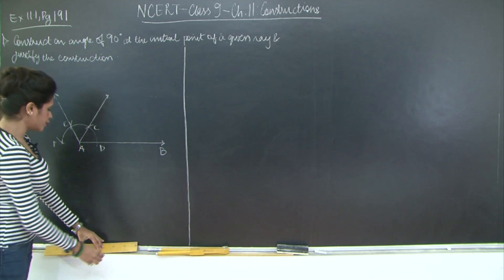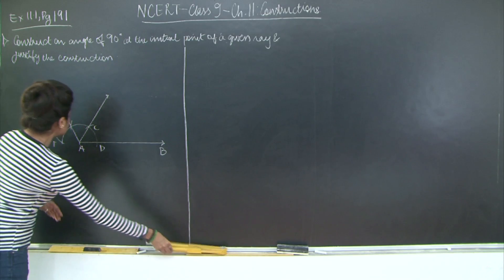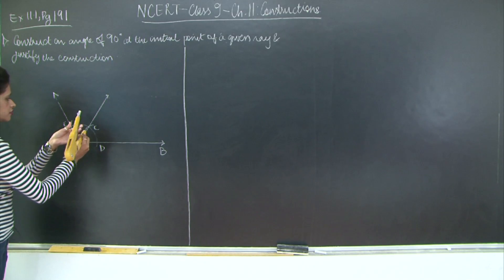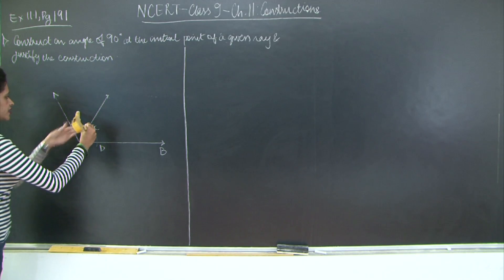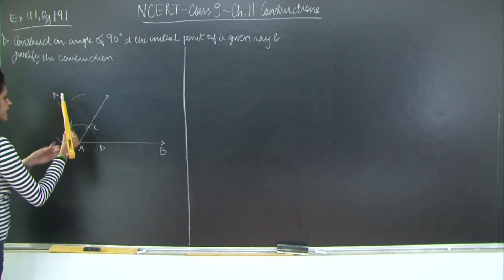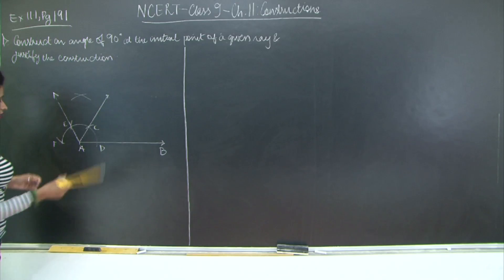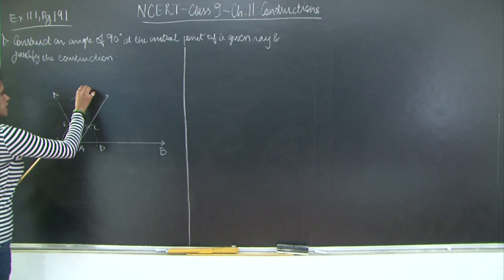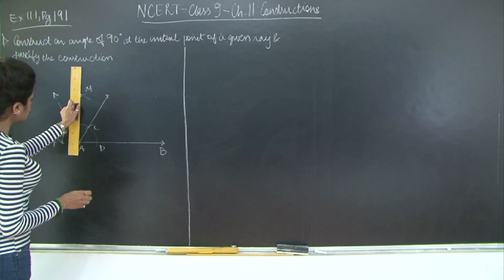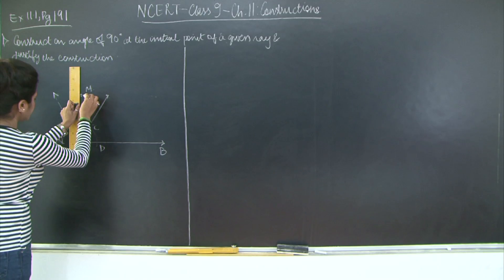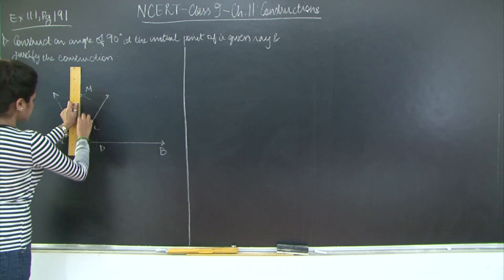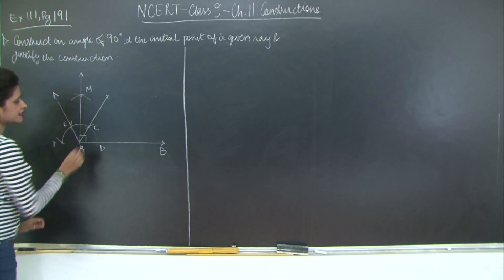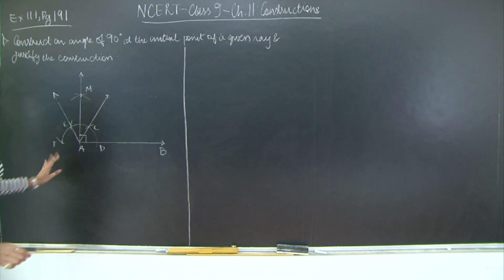Now we are going to draw the angle bisector of angle EAC. We already have an arc here, and we learnt how to draw the angle bisector. I will call this point M and join M to A. This angle MAB is 90 degrees — so this is the construction.